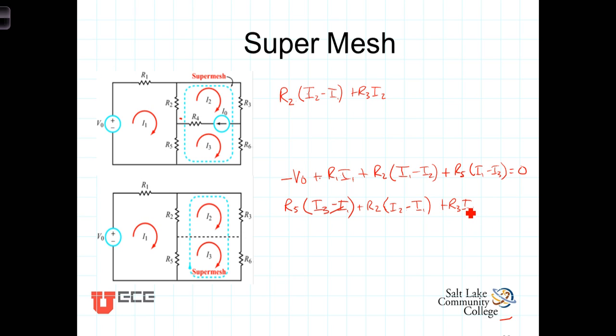And finally, we've got the voltage drop across R6, which will be R6 times I3. And the sum of those voltage drops will equal zero.